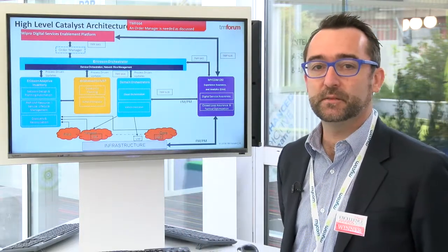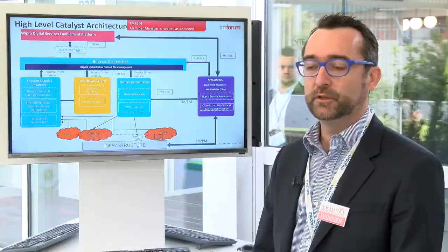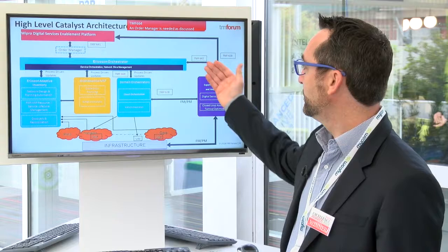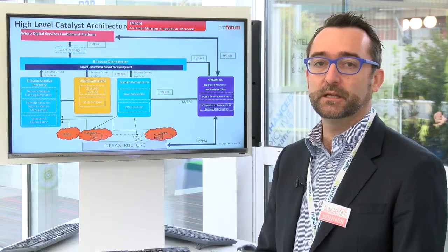Here's the architecture of the catalyst. We can see that we had a digital service enablement platform on the top, providing IoT information about the video quality. We had a service orchestrator allowing to automate the network design and network fulfillment. And we had Mycom OSI providing closed-loop assurance in order to proactively monitor quality of the video and the network itself, and if need be, initiate some actions towards the orchestrator in order to resolve any problems.